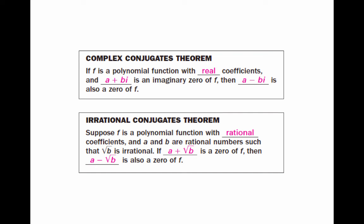Complex zeros — ones with imaginary components — and irrational zeros always bring a conjugate buddy with them. So if a + bi is an imaginary zero, then a - bi must also be a zero. If a + √b is a zero, then a - √b must also be a zero. This happens naturally because we use the quadratic formula to find them, and that's just what the formula produces.